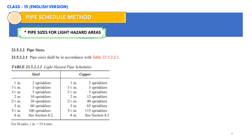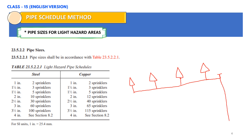I will show you on screen by drawing a sample pipe with sprinklers. We have upright sprinklers here. This is the main line, this will be the branch line, and these are the sprinklers.